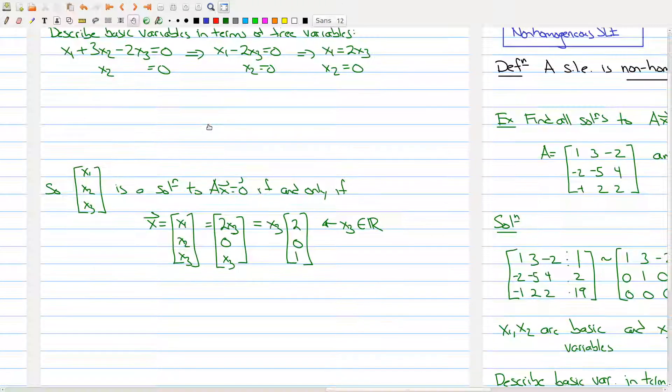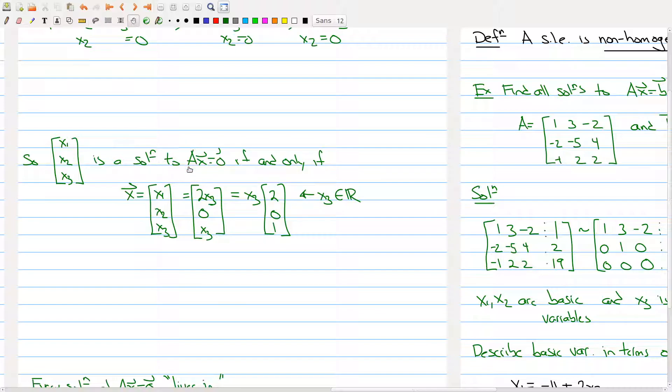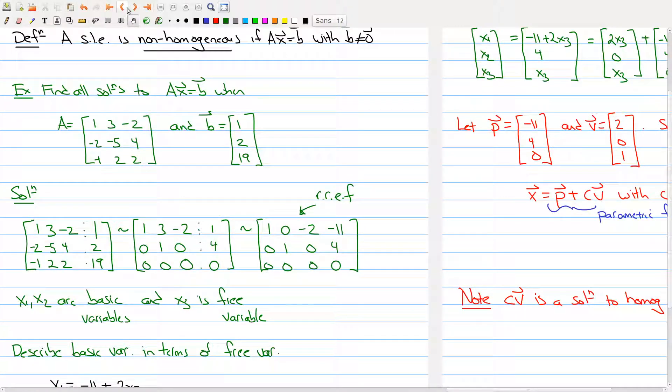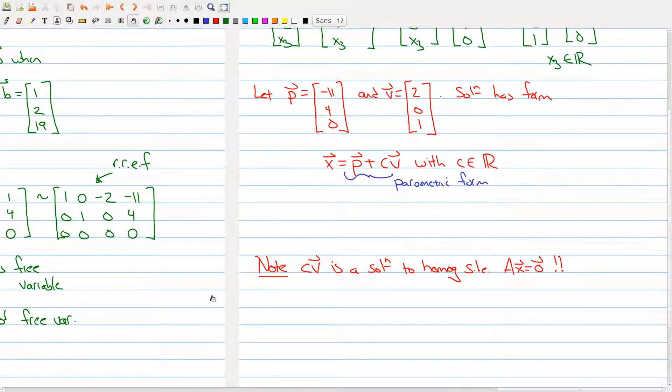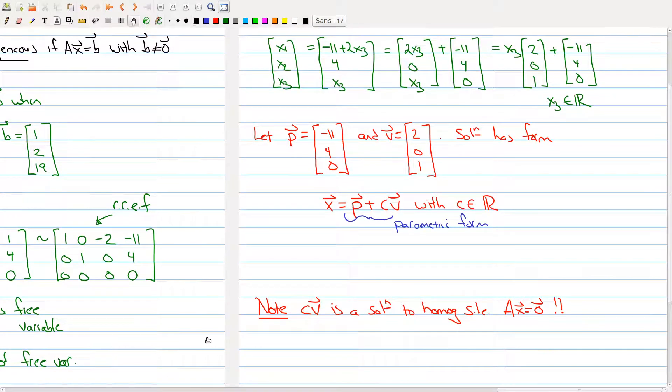To my solutions to the homogeneous system, I actually saw the exact same thing: x3 times the vector 2, 0, 1.